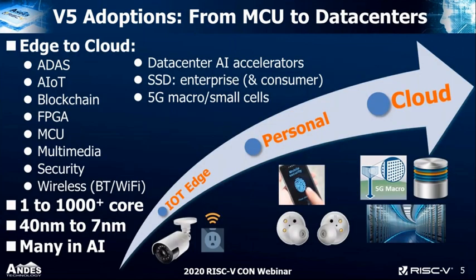Where is RISC-V being used? It's really being used everywhere, from the smallest microcontrollers to very high-end data centers — ADAS, IoT, blockchain processing, in FPGA, general purpose microcontrollers, multimedia security, data center AI accelerators, storage, enterprise and consumer storage, and 5G macro and small cells. Our customers implementing processors or SoCs incorporate one to more than a thousand cores on single SoCs in a variety of processes from 40 nanometers to 7 nanometers, many of them in the AI space.